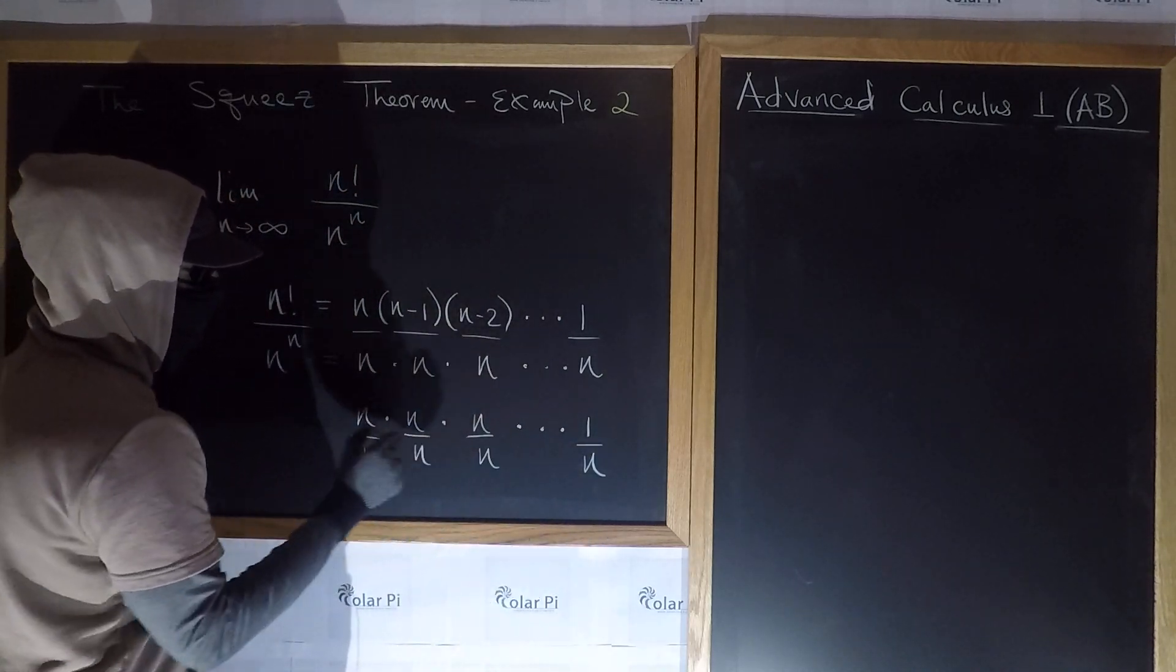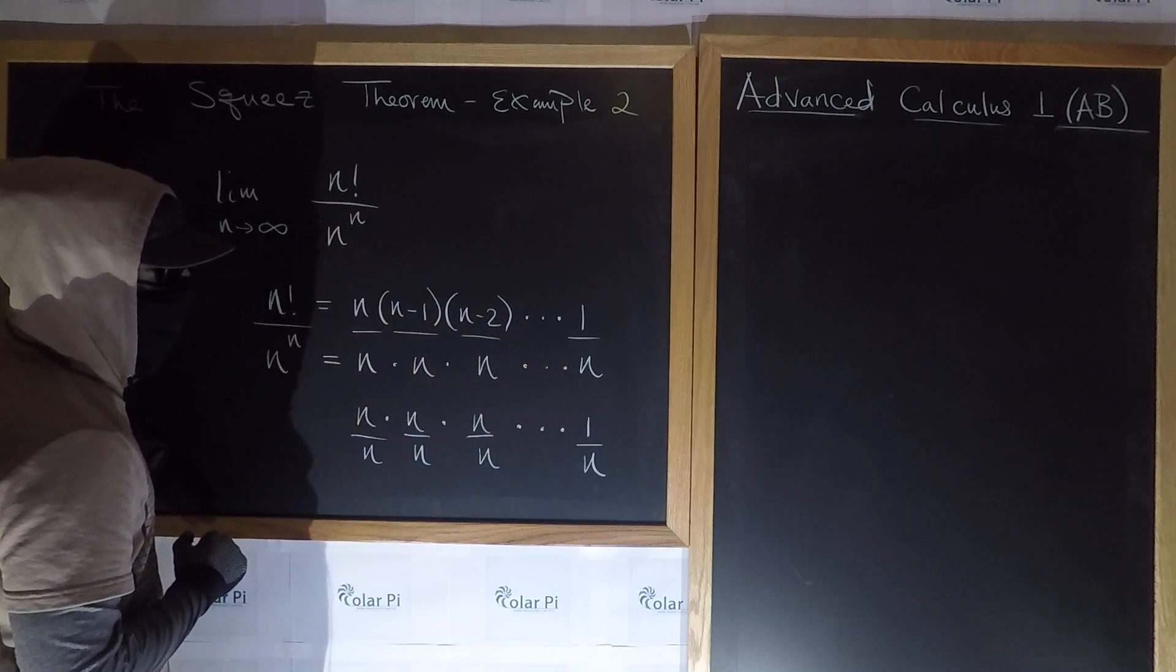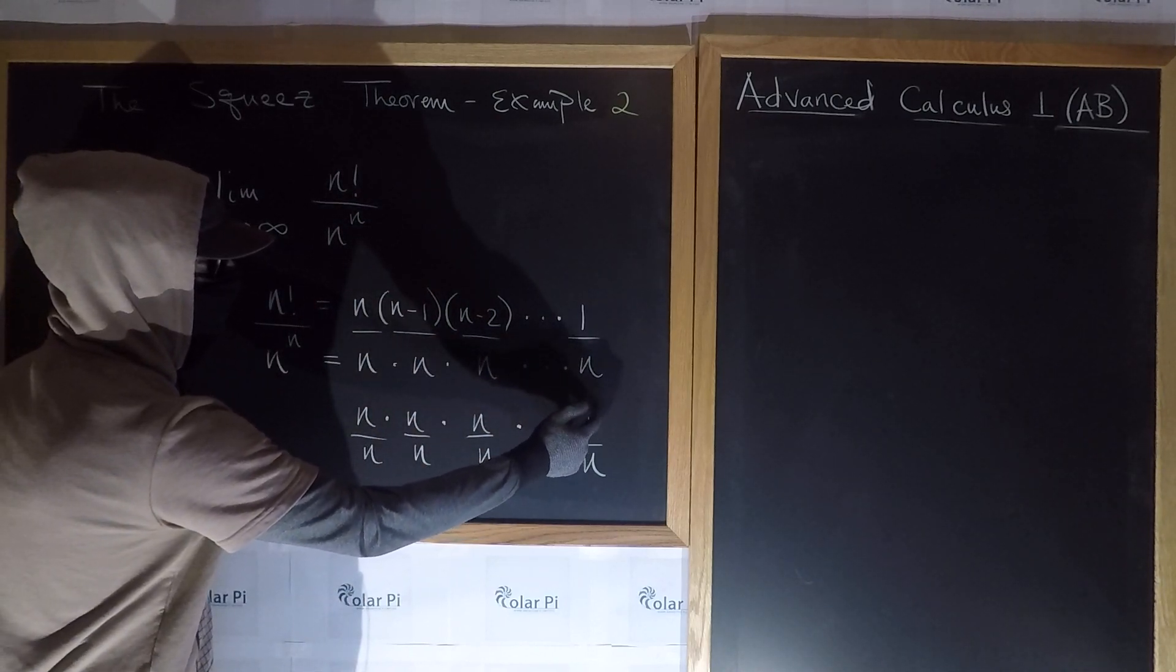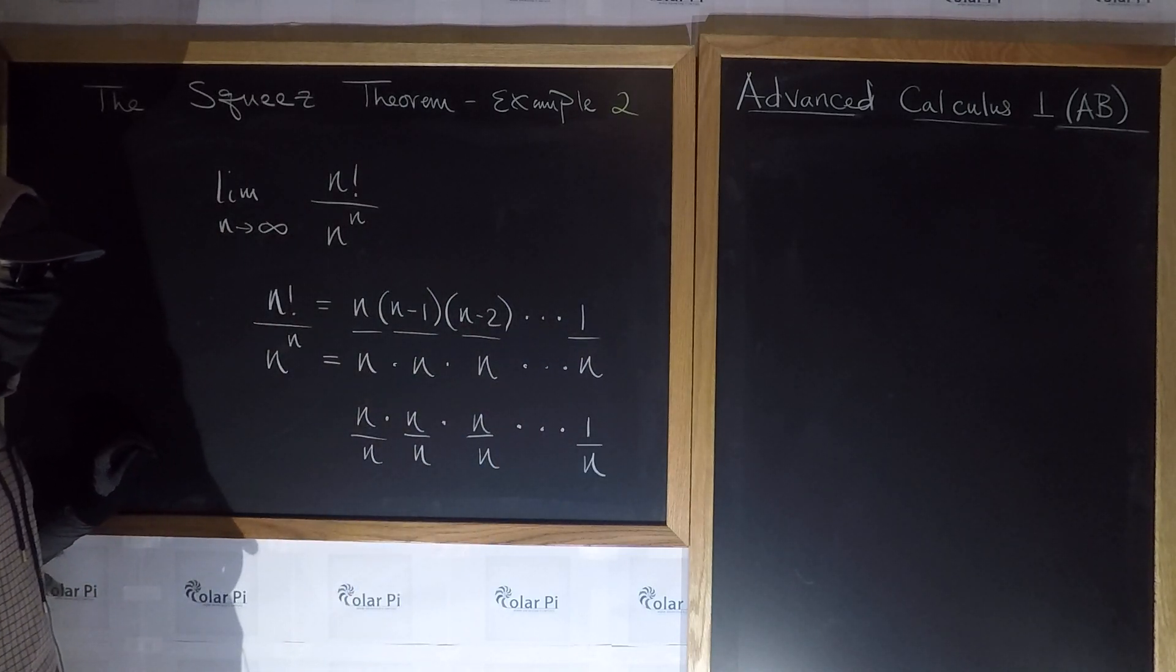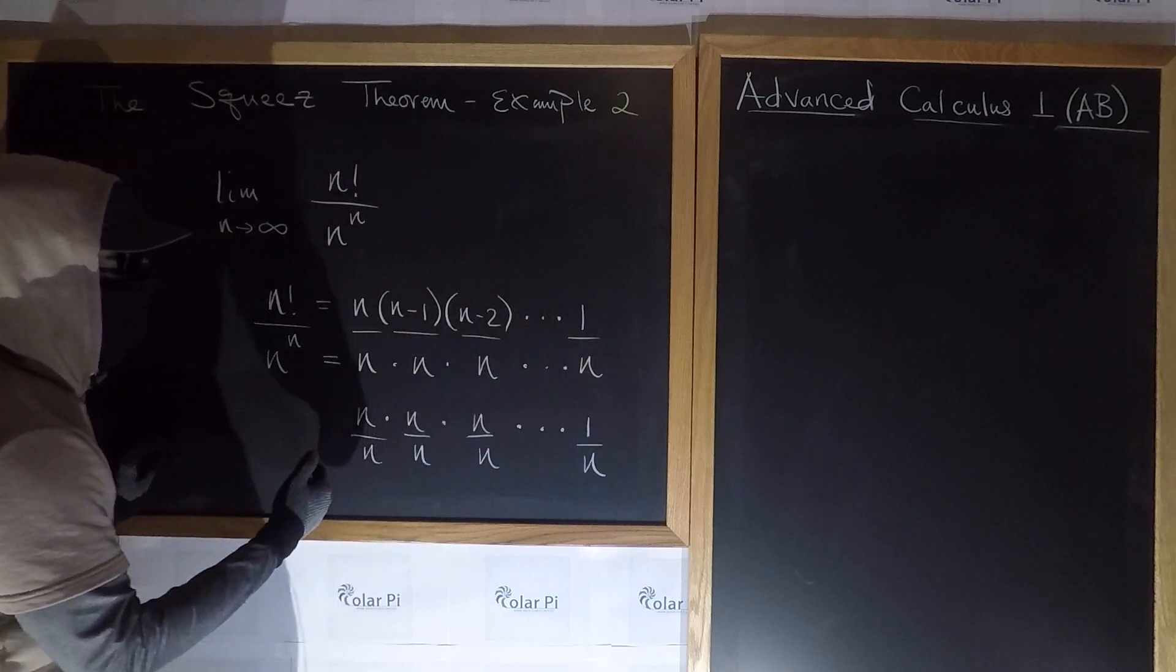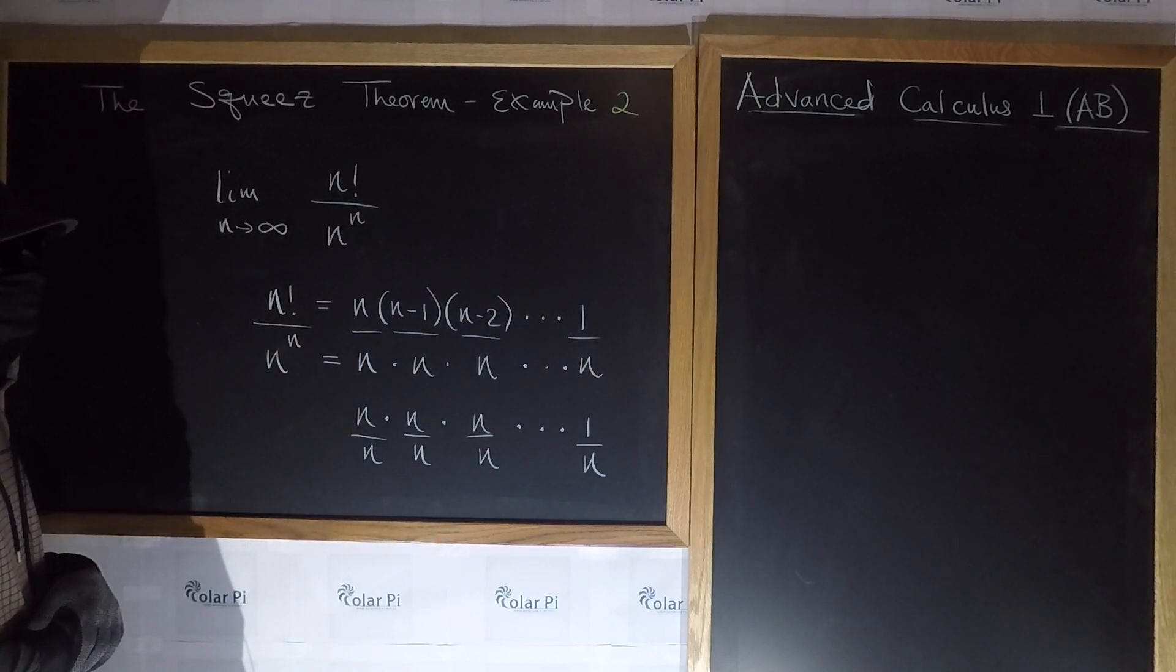So here, although you don't see them, as I said, we have n minus 1 n's being multiplied in the numerators. And so the only thing that's not an n is this one. And then all the denominators are n's. Well, clearly, this here has got to be bigger than this here. It's got to be strictly bigger than this here.